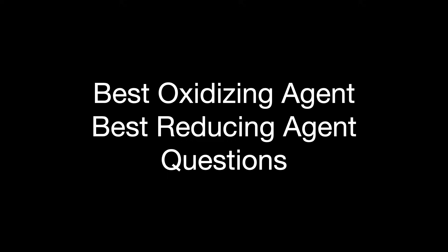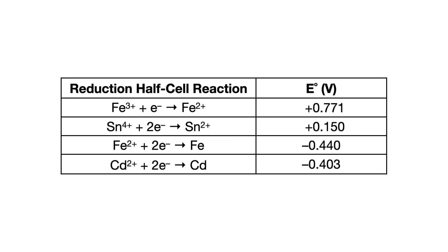Since you're watching this video, I bet you already get tripped up when having to decipher between which atoms or molecules get oxidized and reduced, and then mix that up with oxidizing and reducing agents. So here's a quick and easy trick for best oxidizing agent and best reducing agent questions — the ones that give a table of reduction half-cells with their E values.